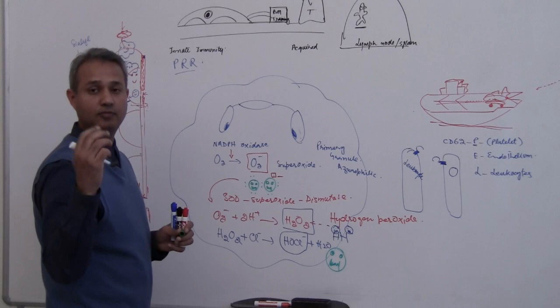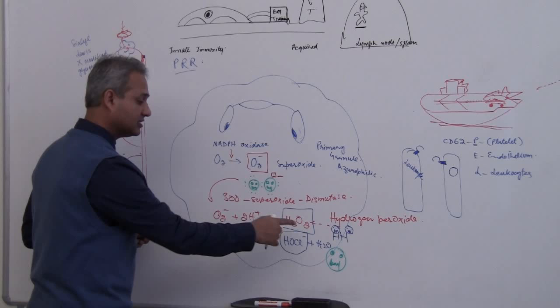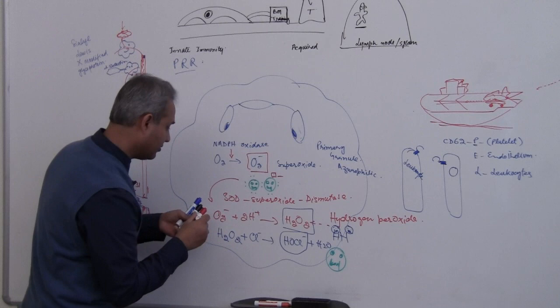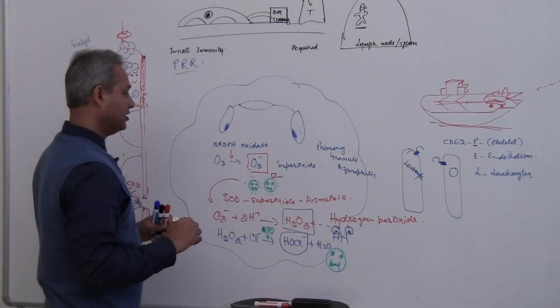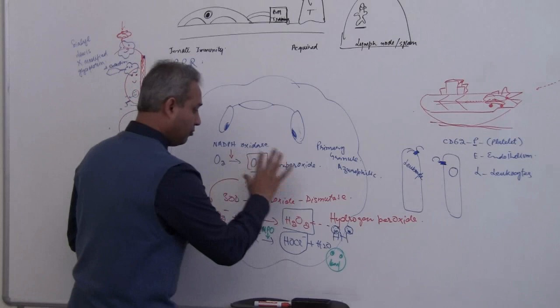So it has three scary monsters which are sitting in the system. Remember macrophage actually does not have this third one because it does not have myeloperoxidase. Myeloperoxidase enzyme is needed to have this reaction where we make bleach. Macrophage does not have it. Macrophage has two monsters, neutrophil has three monsters.